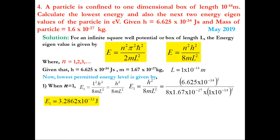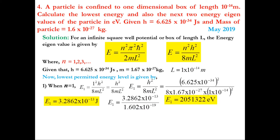Converting E₁ to electron volts by dividing by 1.602×10⁻¹⁹ J, we get E₁ = 2,051,322 eV, or equivalently E₁ = 2.0513 MeV (where mega means 10⁶).